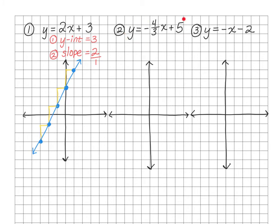Let's take a look at number 2: y equals negative four-thirds x plus 5. My first step is to find the y-intercept — the number not connected with the x. In this case, my y-intercept is 5. So we start at the origin and go up to 5 and put our y-intercept there. The second step is to find my slope, which is negative four-thirds. A lot of times students want to go up 4, but if the graph doesn't let you go up that direction because it's not big enough, you can instead go down 4. It doesn't have to go up and over if the graph doesn't allow for it.